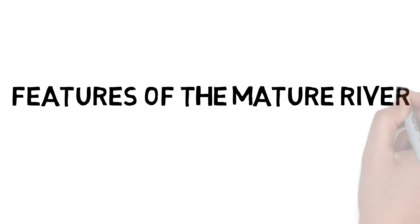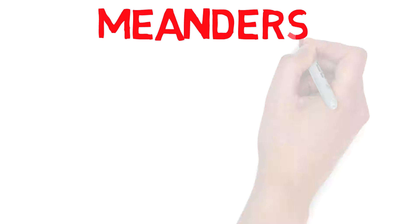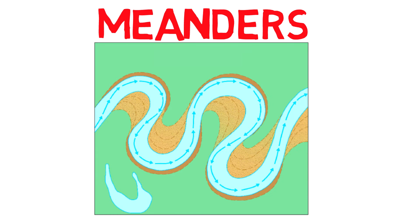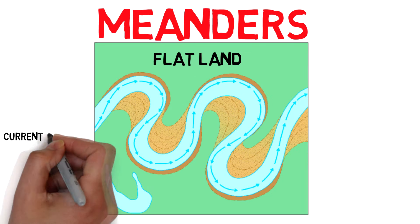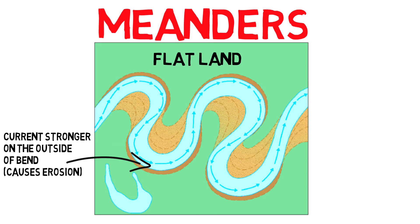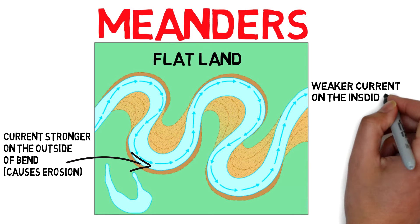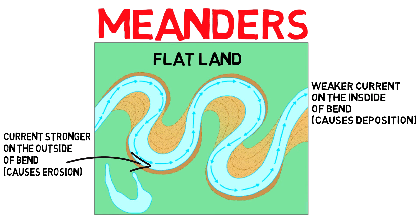Now we can move on to the mature stage of the river. The first feature is meanders — bends or curves in a river. As the land is much flatter than in the youthful stage, the river tends to swing from side to side. The current will be stronger on the outside of the bend, so erosion will take place, while on the inside of the bend the current flows more slowly, so deposition — the unloading of the river's load — will take place.